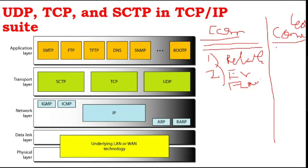Each data will be considered as independent data. Different packets are considered separately, and each and every data will be accessed separately. In connectionless service, there is no error control and no flow control — it is unreliable.